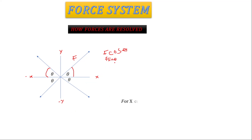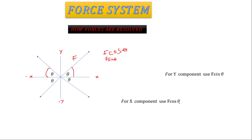The take-home message is: for x components use F cos θ — it can be either negative or positive F cos θ depending on the quadrant. For the y component use F sin θ, and again whether it's negative or positive depends on the quadrant. Now we'll take one example to see this in action.